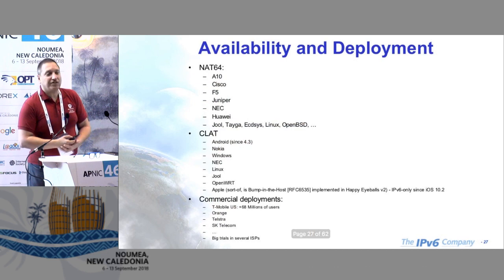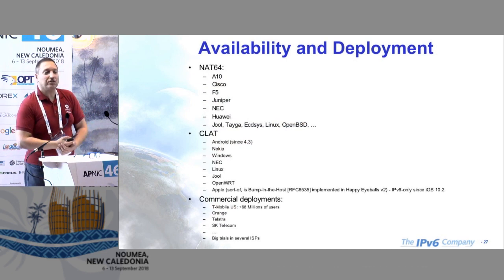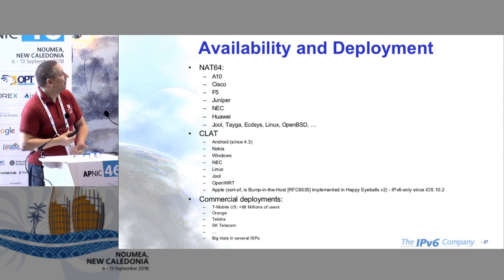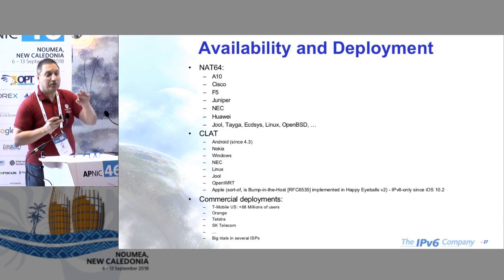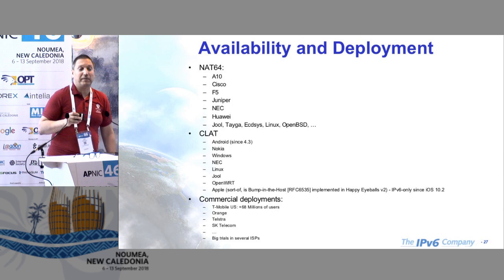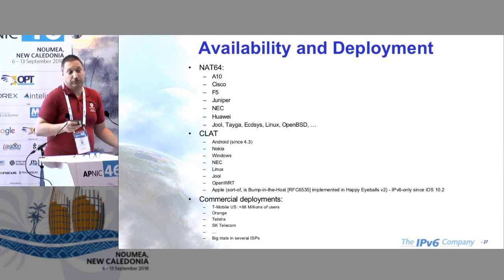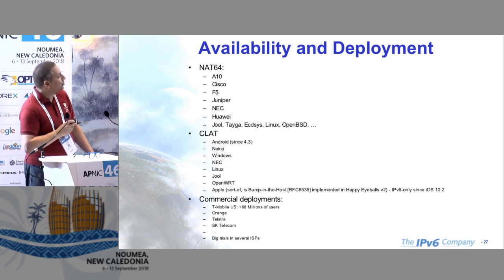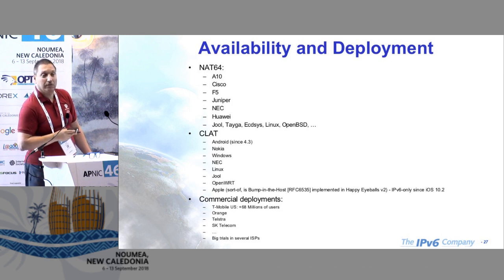How is NAT64, CLAT, and all these things deployed? There are many vendors for both NAT64 and CLAT. For the demo we will run now, I am using Jool — a NIC Mexico implementation of NAT64 and many other things. We are also using Jool for the CLAT, and in some other cases I use OpenWRT.